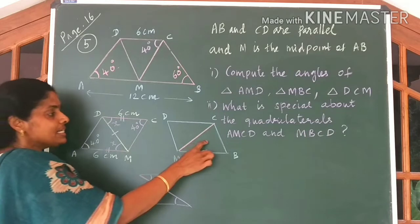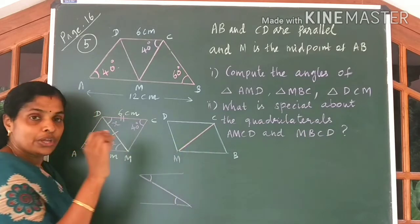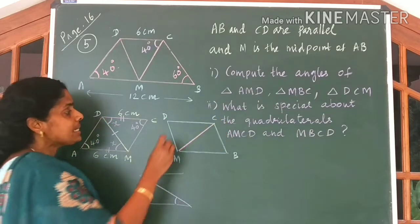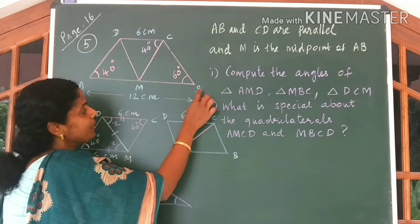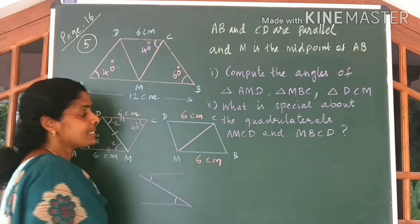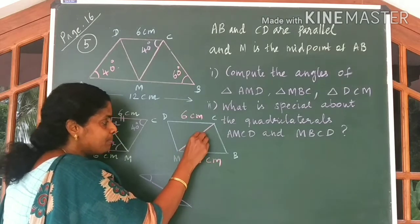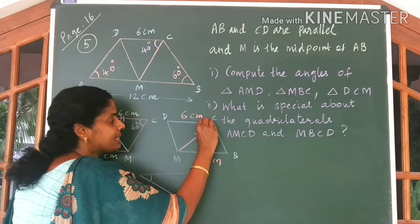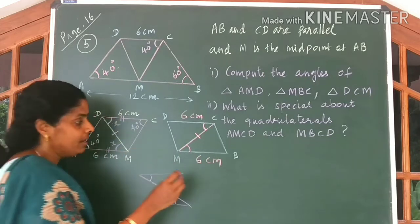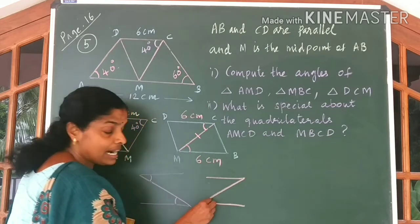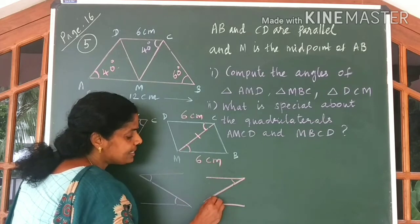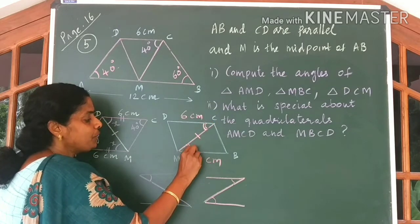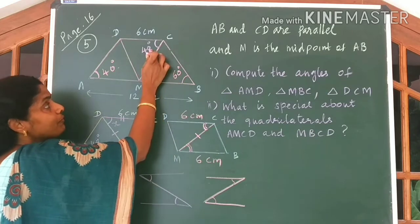Now come to the second figure. Use the same idea. We know CD is equal to 6 cm. Also, MB is equal to 6 cm. MC is the common side. What can you say about these two angles? When two parallel lines are cut by a transversal, alternate angles formed are equal. So you get this angle and this angle to be equal — equal to 40 degrees.